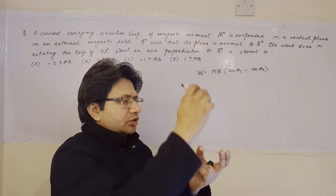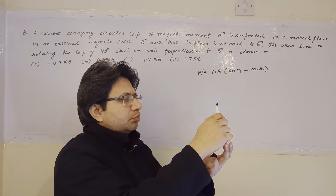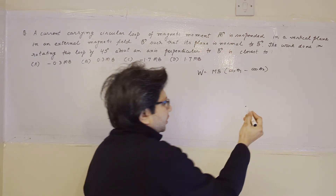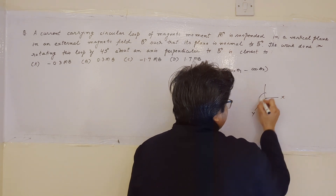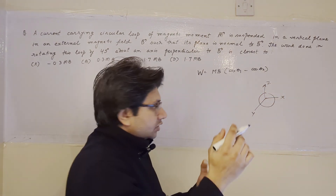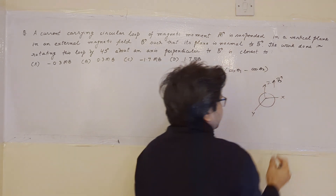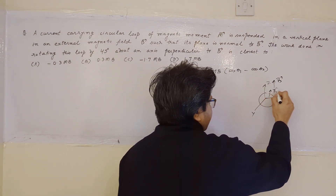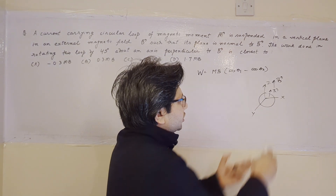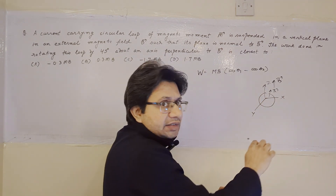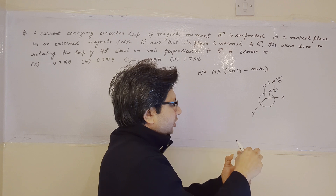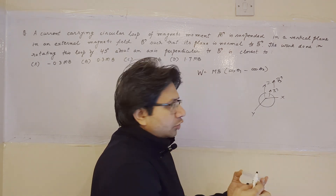The coil is rotated about an axis perpendicular to B. Taking x-y as the plane in which the coil is placed and the direction of B along z, the area vector is also along z. The coil is rotated along an axis perpendicular to z, meaning it moves either in the x direction or y direction by an angle of 45 degrees.